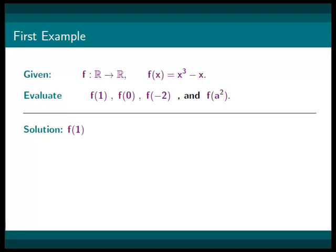We will first compute f at 1. By solving in 1 where x was, we get 1 cubed minus 1, which gives us 1 minus 1, which is just 0.